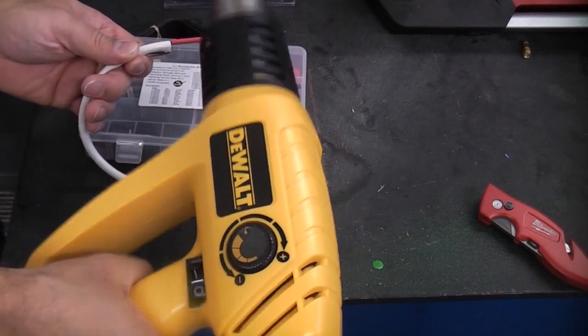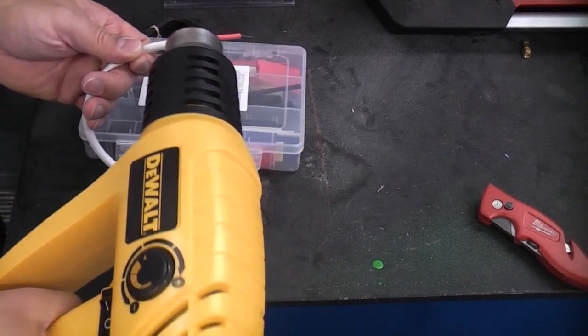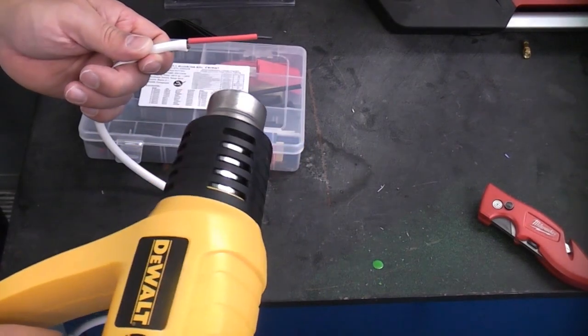The best way to apply heat to the sleeving is to use a hot air gun like this. You can use a soldering iron, but it does tend to scorch the actual sleeving a bit.